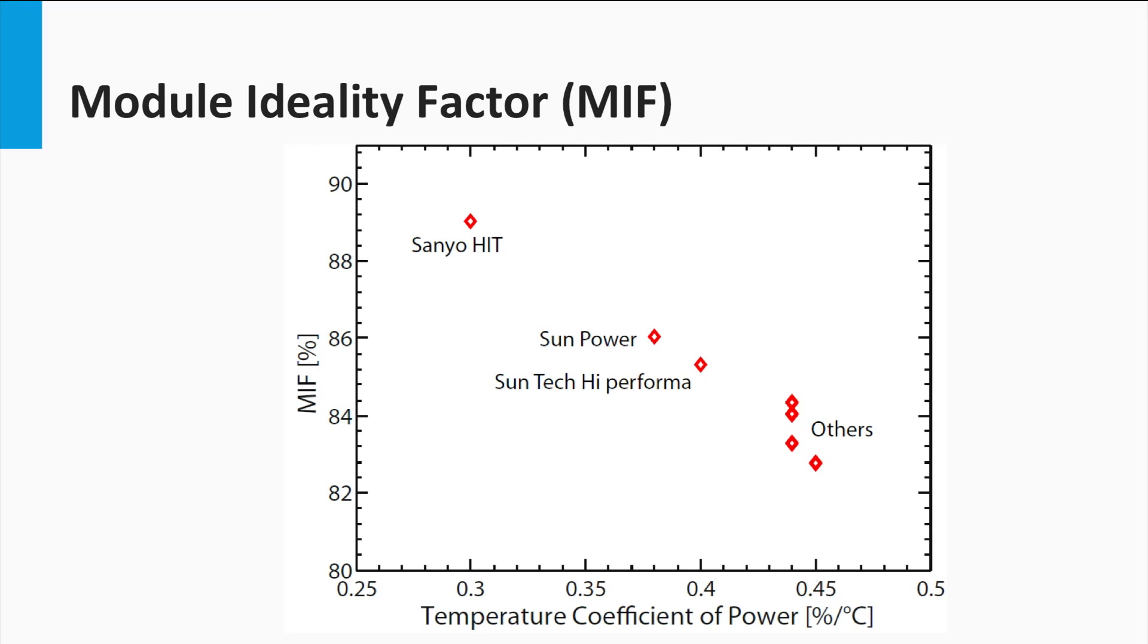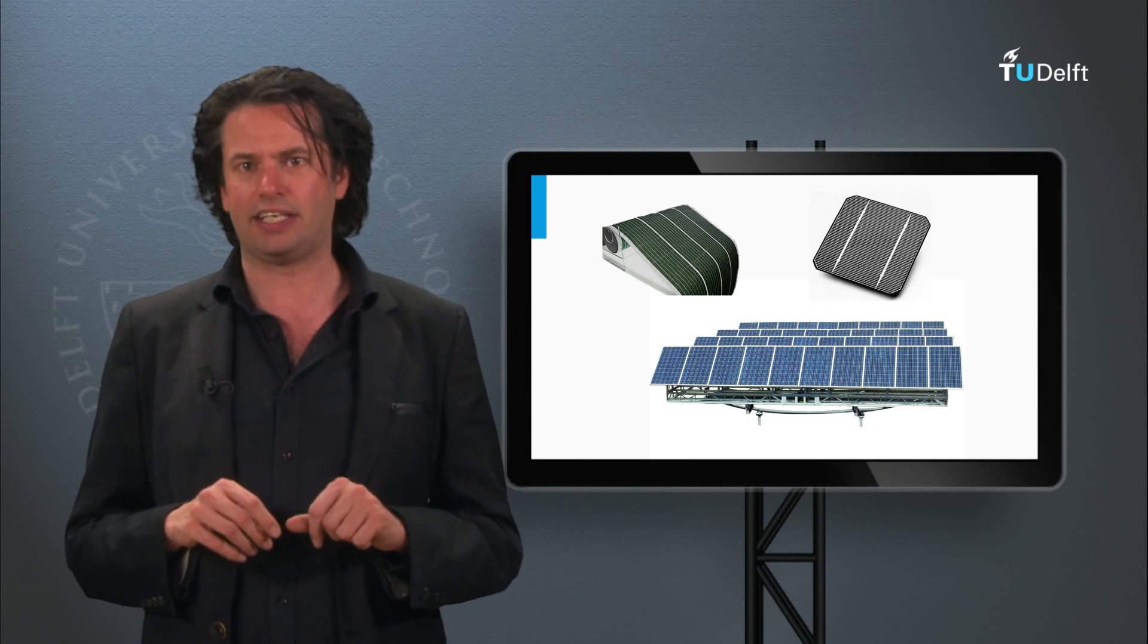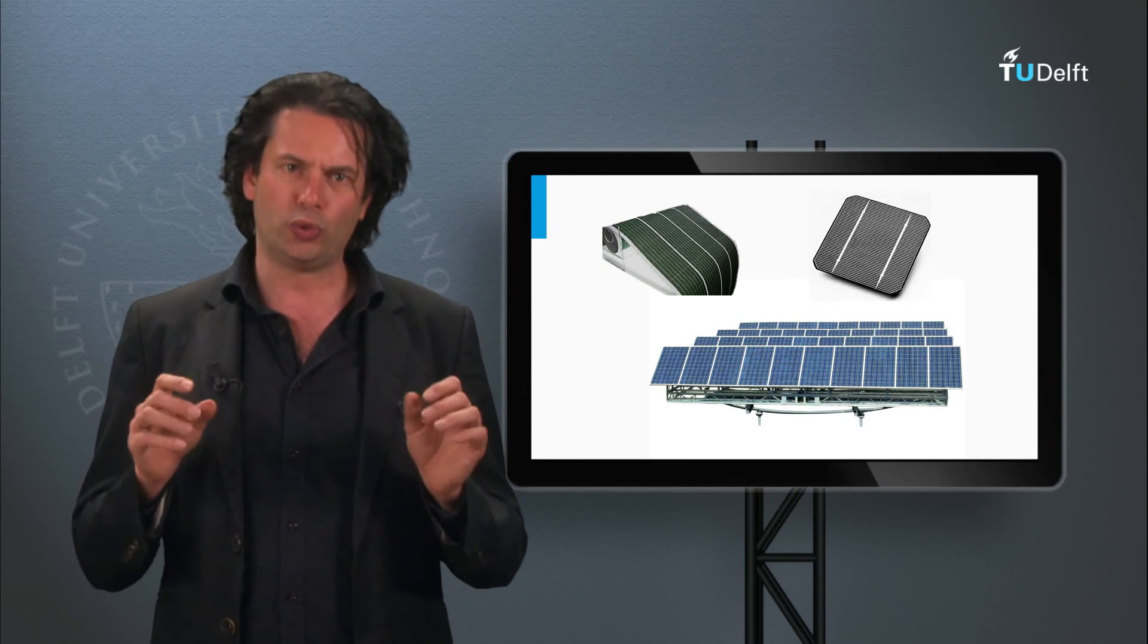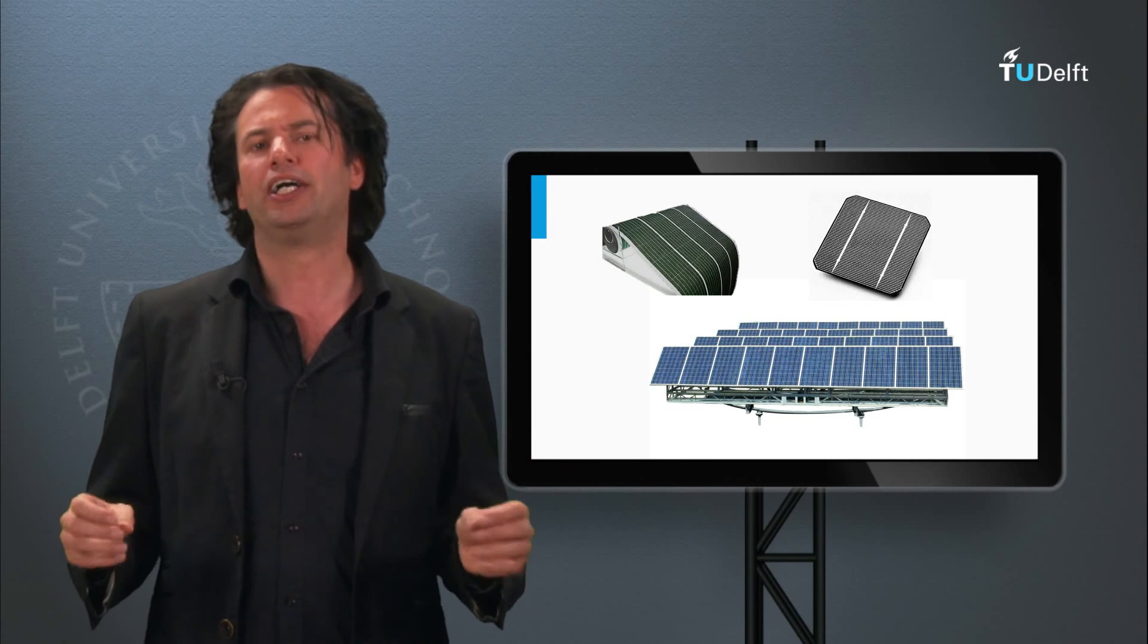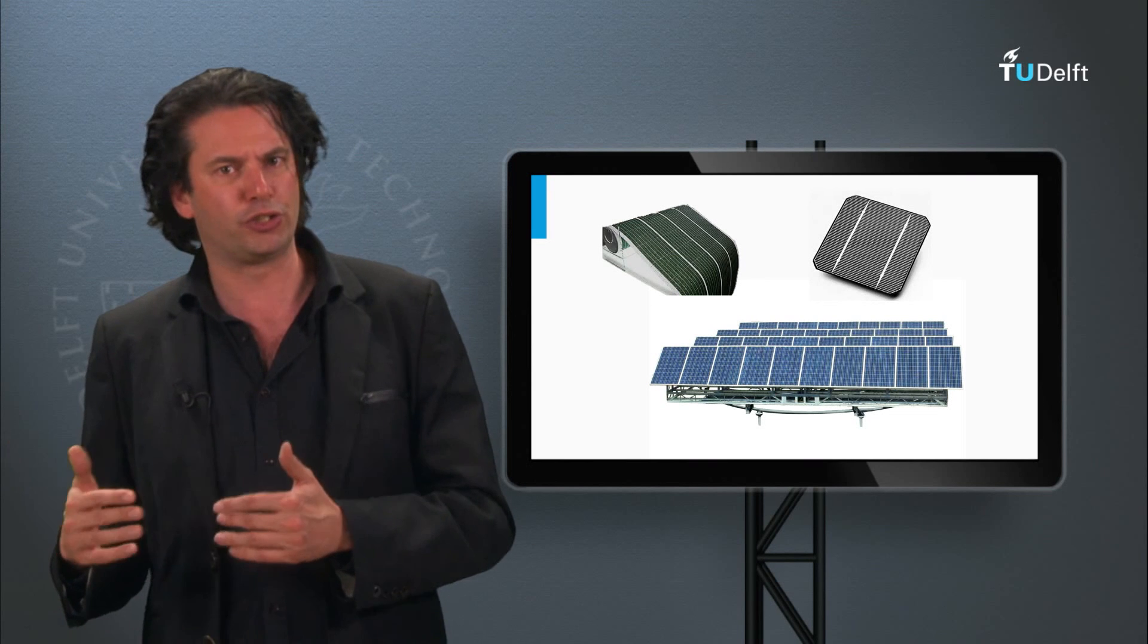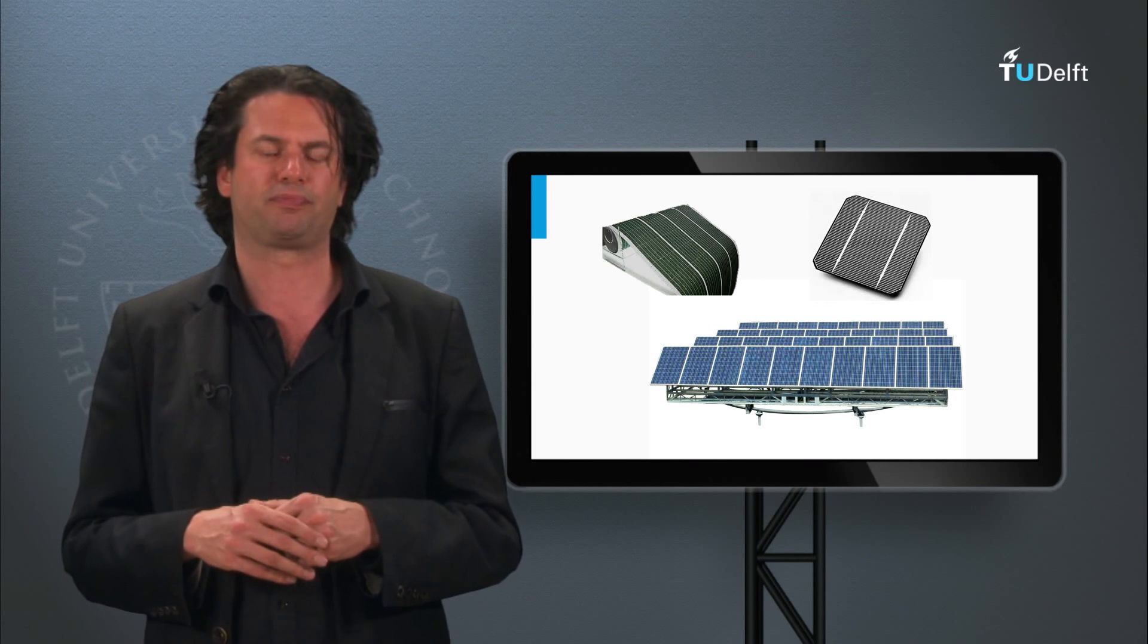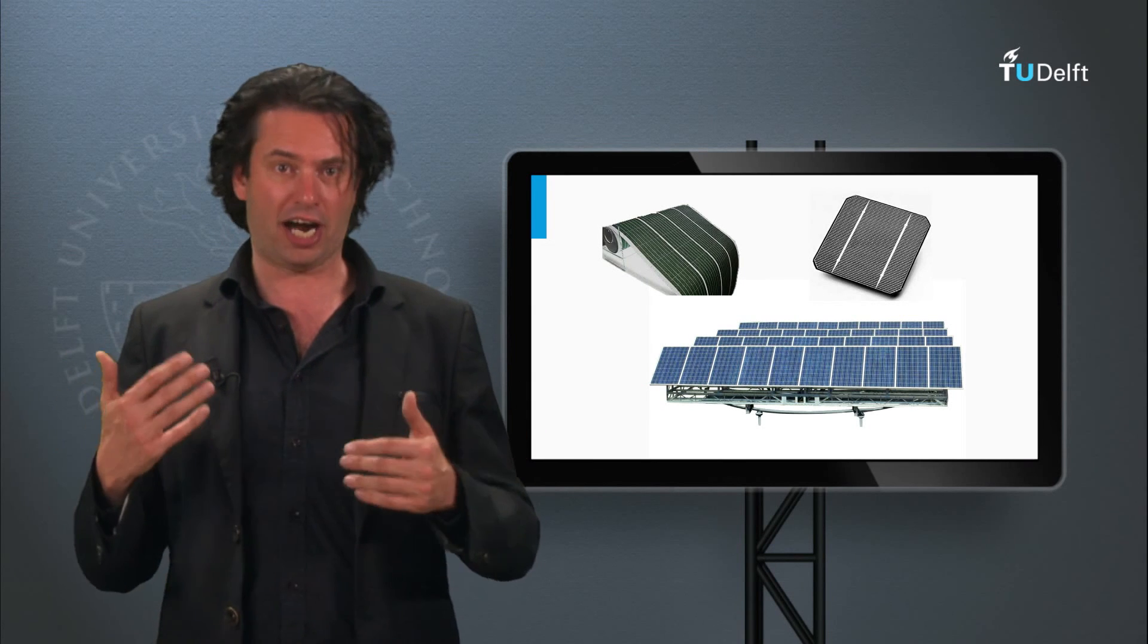The Sanyo HIT module shows the highest module ideality factor owing to its low temperature coefficients of power. More PV technologies are being analyzed at the Delft University to understand the extent of the temperature effects. As said before, the amorphous silicon technologies show very low temperature coefficients due to their high open-circuit voltage. This means they would show a better response under high temperatures.